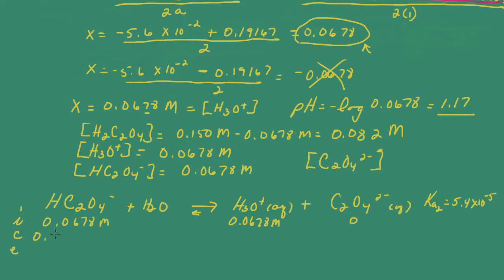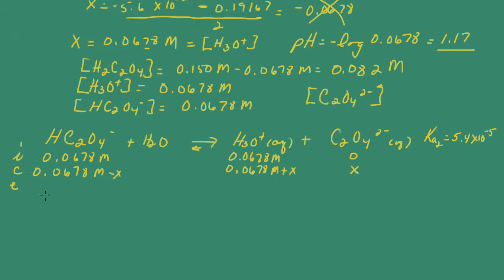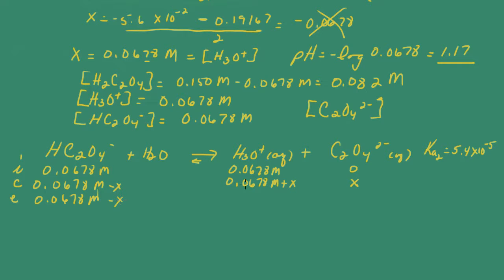To find the concentration of the oxalate ion, we look at Ka2. The second dissociation is the hydrogen oxalate ion dissociating — this is much more difficult because Ka2 is 5.4 times 10 to the negative 5, much smaller than Ka1. Setting up the ICE table: the initial concentration of hydrogen oxalate is 0.0678 molar and hydronium ion is 0.0678 molar, and we solve for X, the oxalate ion concentration.